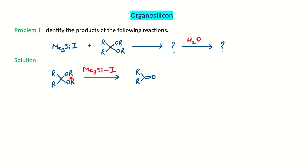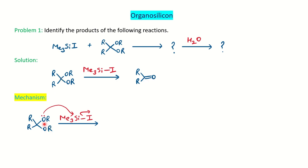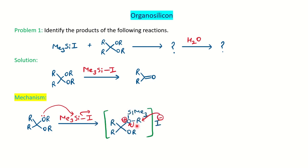Here we are deprotecting the ether group and getting the original carbonyl compound. In the mechanism: oxygen, being electronegative, and silicon, being electropositive, will form a bond — oxygen will share its electron via nucleophilic attack on the silicon, followed by the loss of iodide. In this way, it forms an intermediate where the oxygen has a positive charge. Since oxygen gave its electron to silicon in the first step, oxygen gets a positive charge.